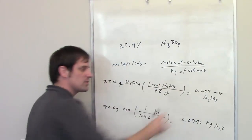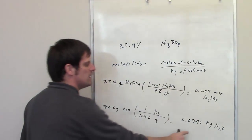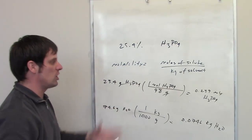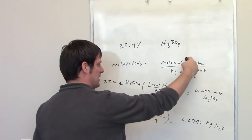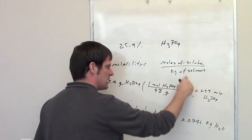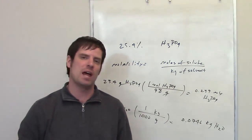This is the number of moles of solute that I have in this solution. This is the number of kilograms I have in solvent. All I have to do is take my moles of phosphoric acid, put it in the numerator, my number of kilograms, throw it in the denominator, and I have the molality.